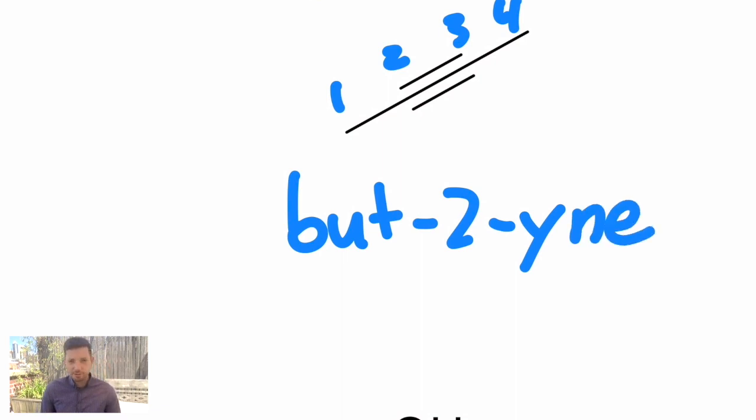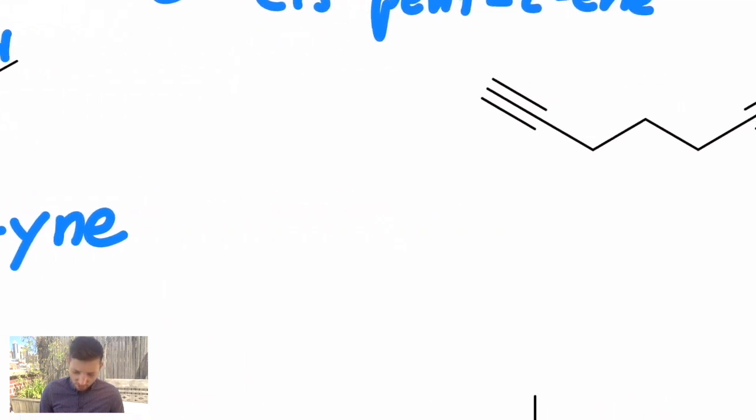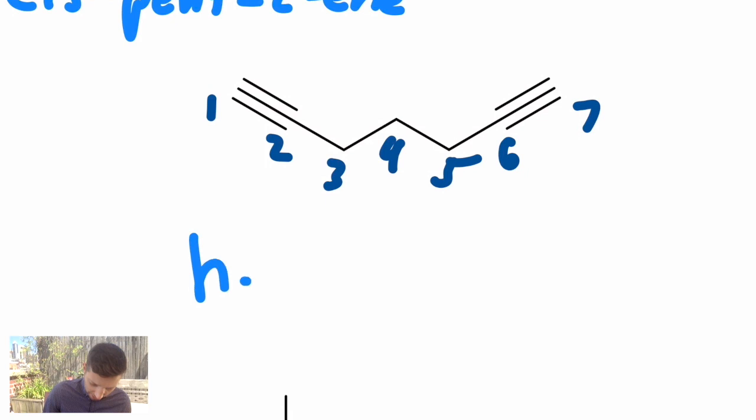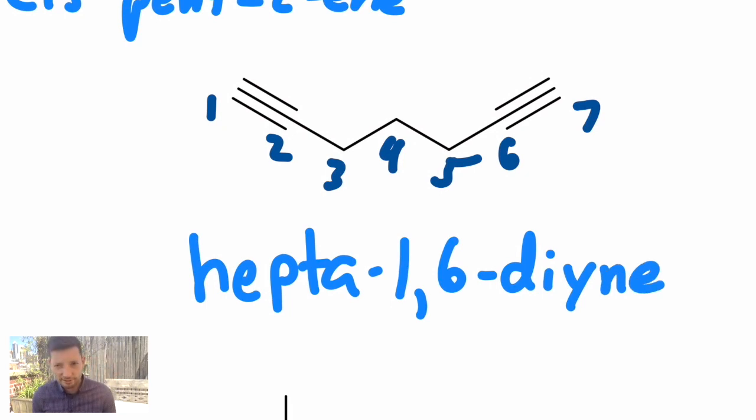This is four carbons: one, two, three, four. So this is but-2-yne. And what about two alkynes? When we had two branches, like two methyls, we put 'di' in front. You do the same thing when you have multiples of the same functional group. Let's check our numbering: one, two, three, four, five, six, seven. This is a hepta chain. This is seven carbons, and it's a di-yne. We have two alkynes, and they start on carbons one and six. So this would be hepta-1,6-diyne.